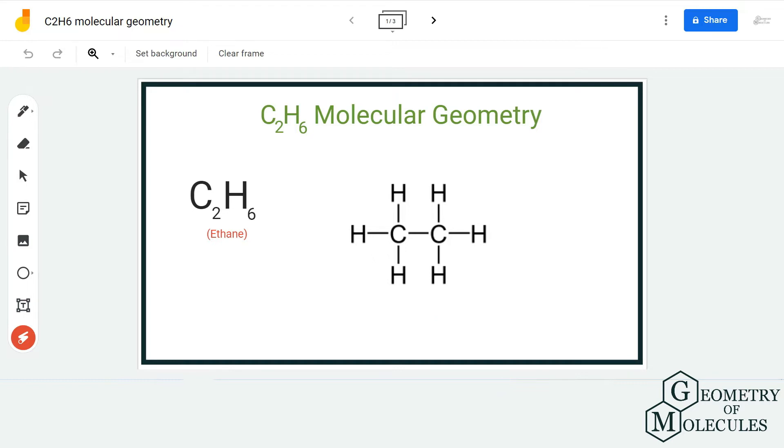This is the Lewis structure of C2H6. There are two carbon atoms forming bonds with six hydrogen atoms. If you look at it, these two carbon atoms have symmetric arrangement because both of these are forming bonds with three hydrogen atoms and are sharing a pair of electrons with each other.